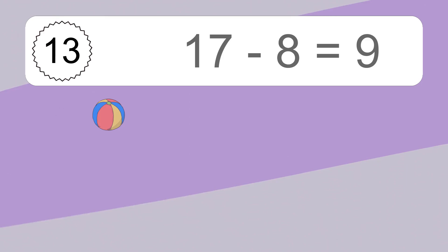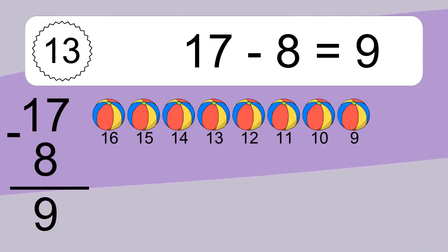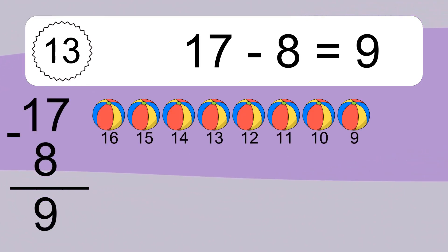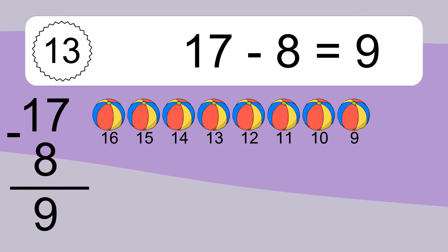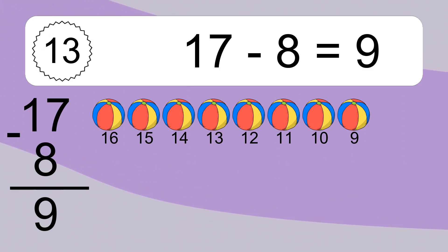17 minus 8 equals what? 17 minus 8 equals 9. Let's count it: 16, 15, 14, 13, 12, 11, 10, 9.